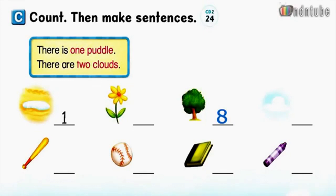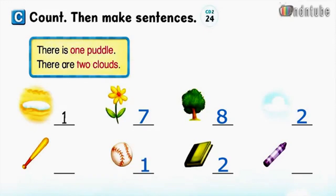There are two clouds. There are three clouds. Number 3: there's one puddle. Number 4: there are seven flowers. Number 5: there are two books. Number 6: there's one baseball. Number 7: there are five crayons.